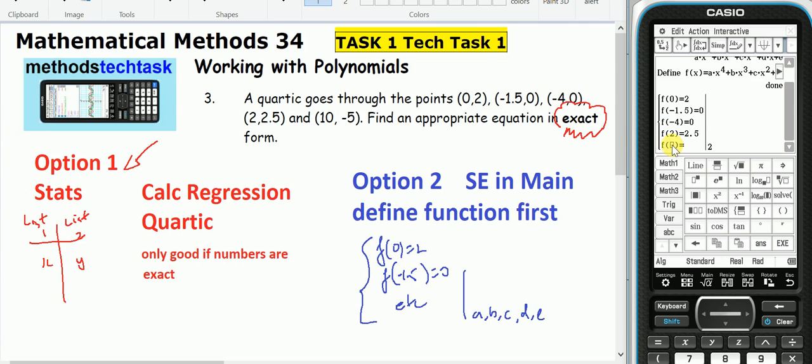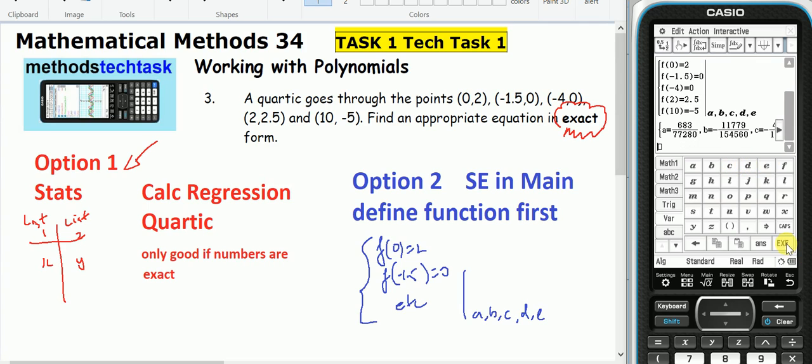And lastly when x equals 10, y equals negative 5. And I'm going to be solving all of those for my unknowns, which are A comma B comma C comma D comma E. And when I press execute, I get all those answers in exact form. That's how you get polynomial equations in exact form. Use simultaneous equations in main.